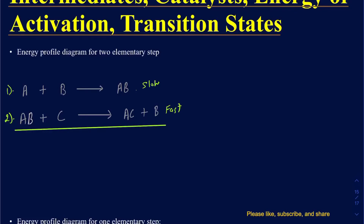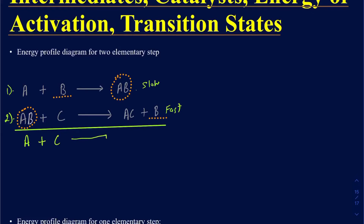Before we do anything, make sure you are able to write an overall reaction. When writing the overall reaction, figure out what common things you have on both sides. I have AB on both sides, so that cancels out. I also have B on both sides — in the reactant and product side — so that cancels out too. What's left on the reactant side is A and C, and that goes on to make AC. So that's your overall reaction.